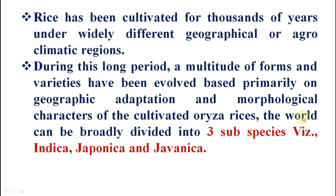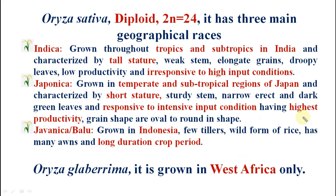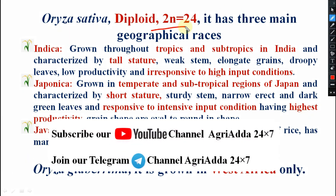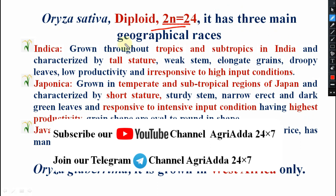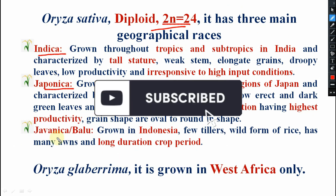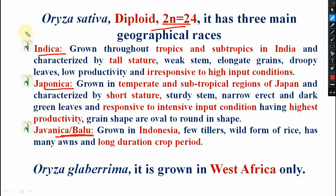Oryza sativa, 2n = 24, has three main geographical races: indica, japonica, and javanica or Balu rice. What is indica? It is grown throughout the tropics and subtropics in India, and these are characterized by tall structure - tall plant, elongated stem, droopy leaves, low productivity, and irresponsive to high input conditions - if you give more fertilizer, they are not that much responding.